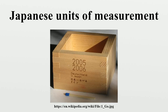Area. The Tsubo, which is essentially the area of two standard-sized tatami mats, is still commonly used in discussing land pricing in Japan. Note that actual tatami vary in size regionally, though legally the area of a Tsubo is standardized. The larger units are also commonly used by Japanese farmers for discussing the sizes of fields. Volume. These units are still used, for example, in sake production.